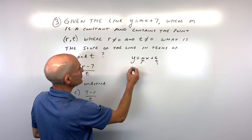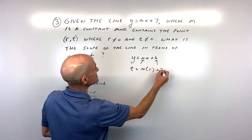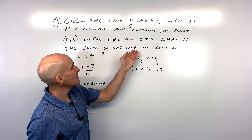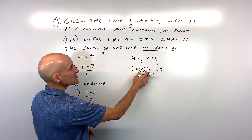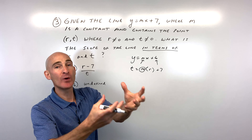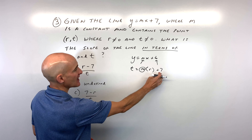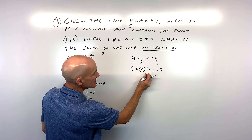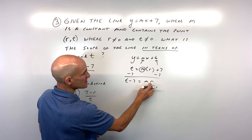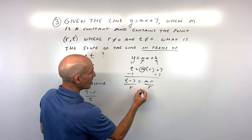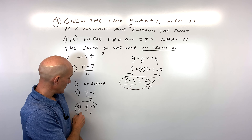Since the point r comma t lies on the line, we plug in: t equals m times r plus seven. The phrase 'in terms of' means we want to isolate m, getting everything else — r, t, and constants — on the other side. Subtract seven from both sides, then divide by r. Now m equals t minus seven divided by r, which is letter D.